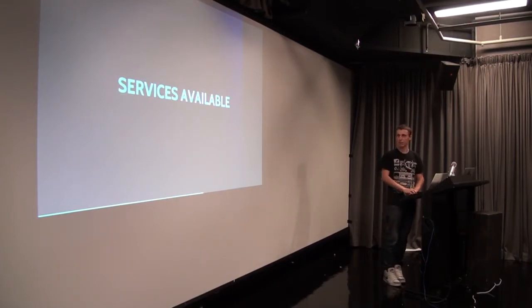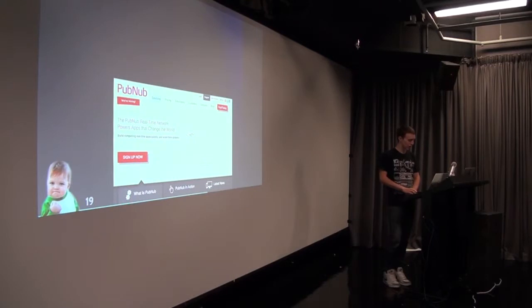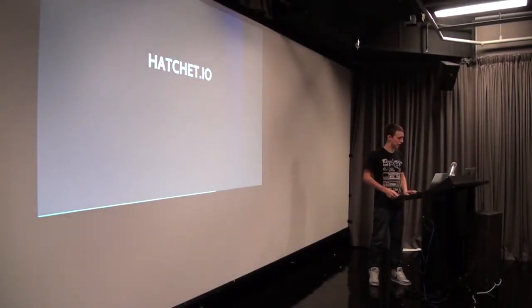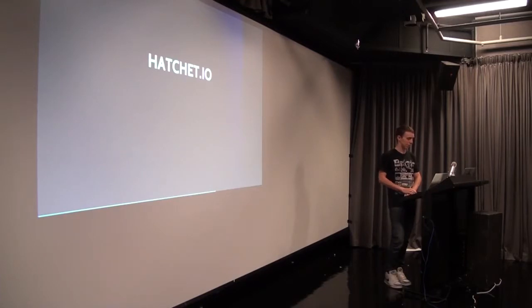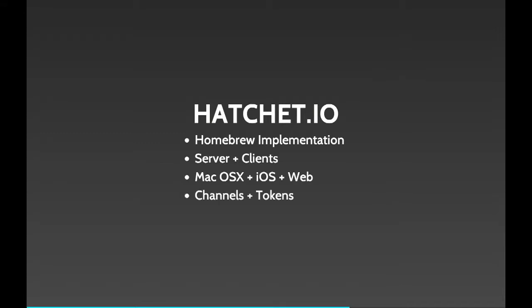There are services available for this. PubNub is one — it has a whole bunch of libraries that use sockets to achieve real-time. Pusher is another one. You can install these in your app. But this is one that I've built to solve the problem — Hatchet.io. It's what we're using for DraftPick and internally for other applications. It's a homebrew implementation — open source on GitHub, not a paid service. It has server and client code that works on Mac, iOS and the web, and it supports channels and tokens so you can namespace your events and secure things with fire tokens.